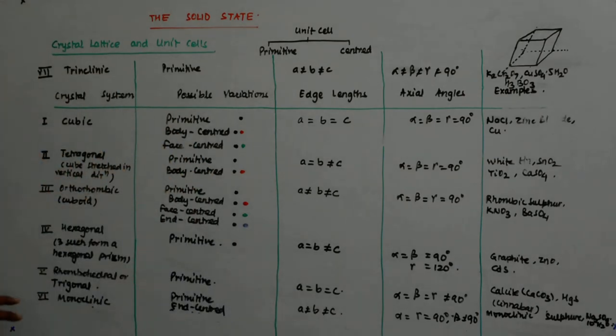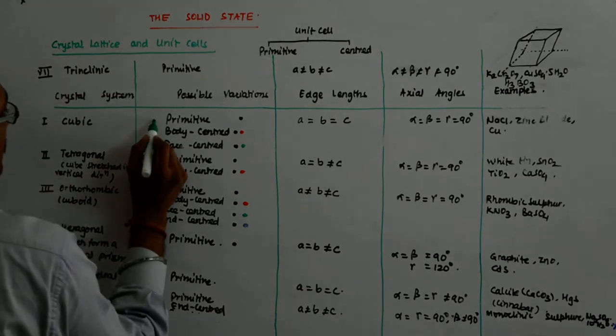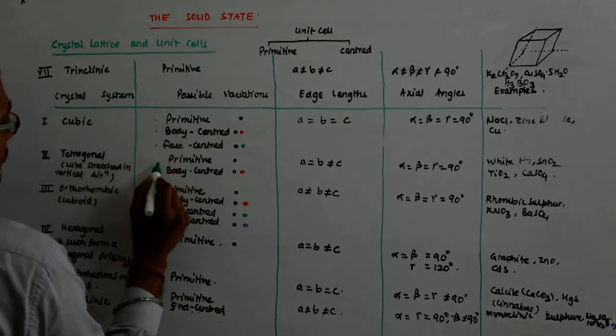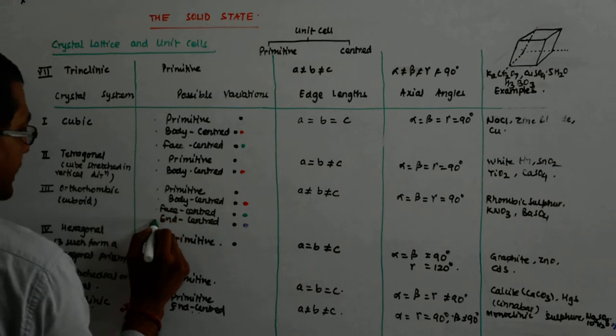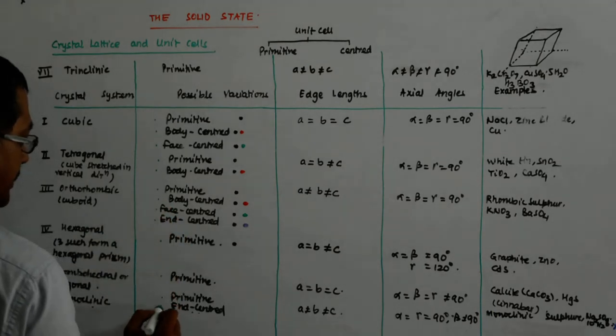These are the seven primitive cells that we had started with. If I count them: 1, 2, 3, 4, 5, 6, 7, 8, 9, 10, 11, 12, 13, 14.